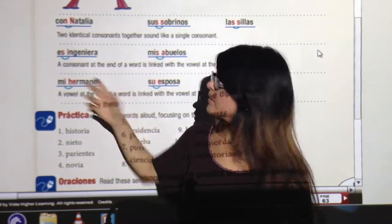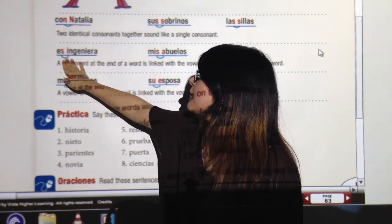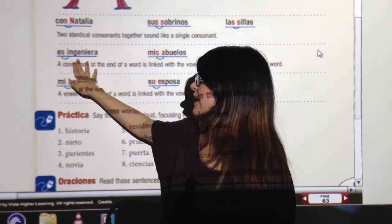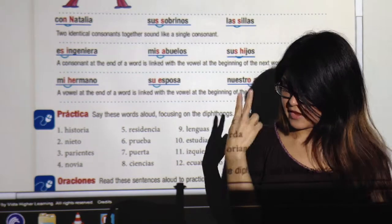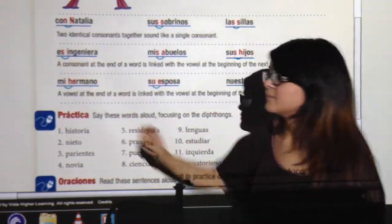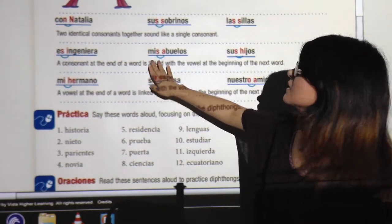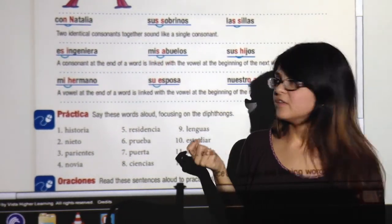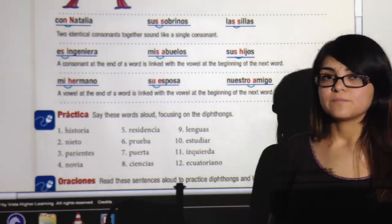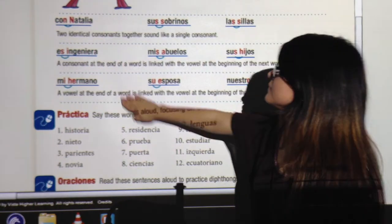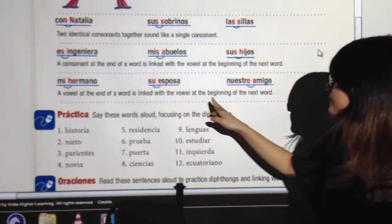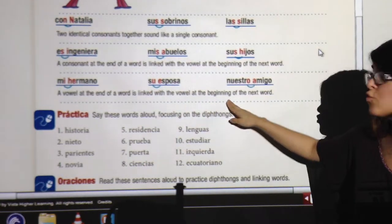Now, in here we have a consonant and a vowel. So it will sound like it's the same word, like we only have one word. There are two, but it will sound like one word. Es ingeniero. Mis abuelos. It sounds like misa. Mis abuelos. Sus hijos. Good. Mi hermano. Su esposa. Nuestro amigo.